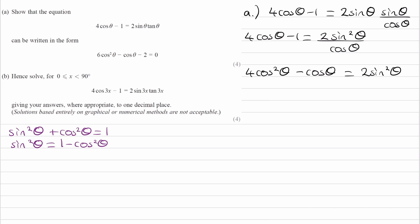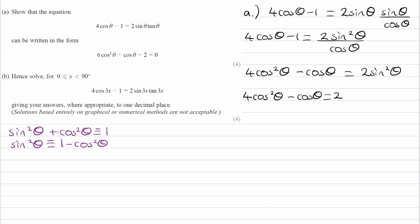And because this is an identity, we can use the triple equal sign. So if sine squared theta is equal to 1 minus cos squared theta, we can replace the sine squared theta that we have here with 1 minus cos squared theta. So our equation then becomes 4 cos squared theta minus cos theta is equal to 2 times 1 minus cos squared theta. Expanding this out gives 2 minus 2 cos squared theta.